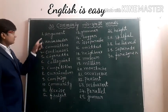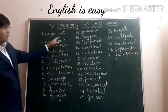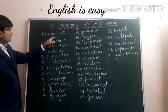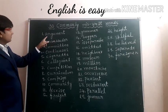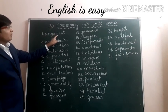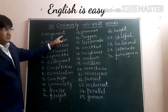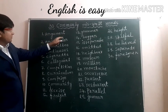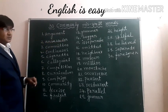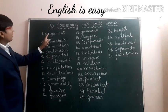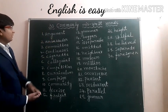First one: Argument. In this word, generally we write A-R-J-U-E-M-E-N-T. Here, after U, we write E. That's wrong. We have to write A-R-G-U-M-E-N-T.